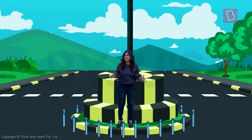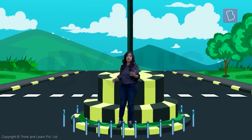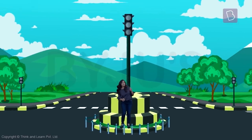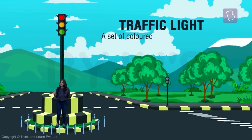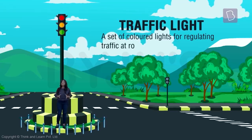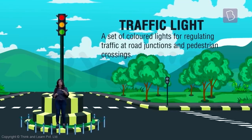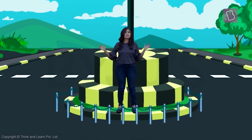The most important thing you need to know about when you go on a road is this thing right over here — it's called a traffic light. Traffic lights tell vehicles what to do, and they also tell walking people — called pedestrians — what to do. They give all these instructions to vehicles and humans.